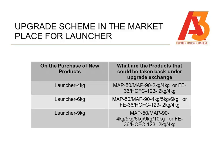For Map 50, Map 90 4kg, 5kg, 6kg, or Fe36, or HCFC 123 2kg or 4kg, you can offer the person a launcher of 6kg.